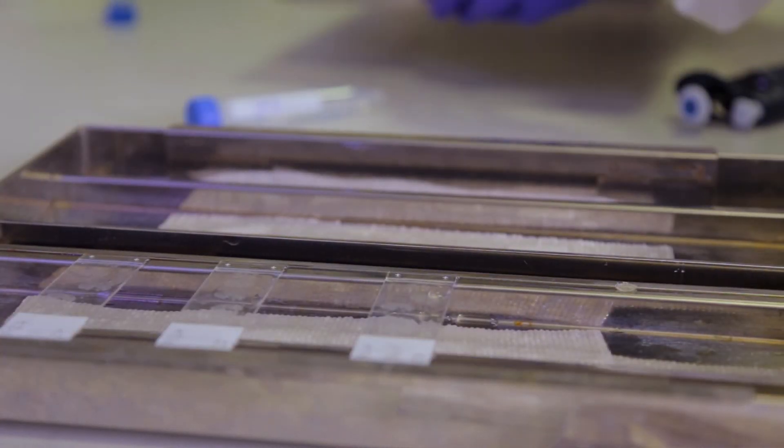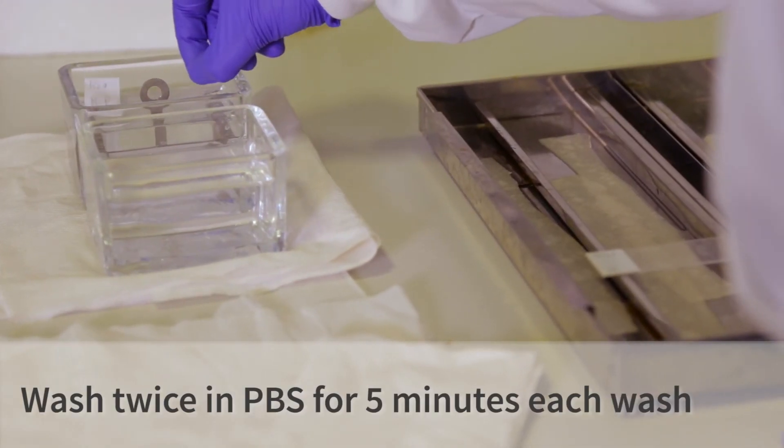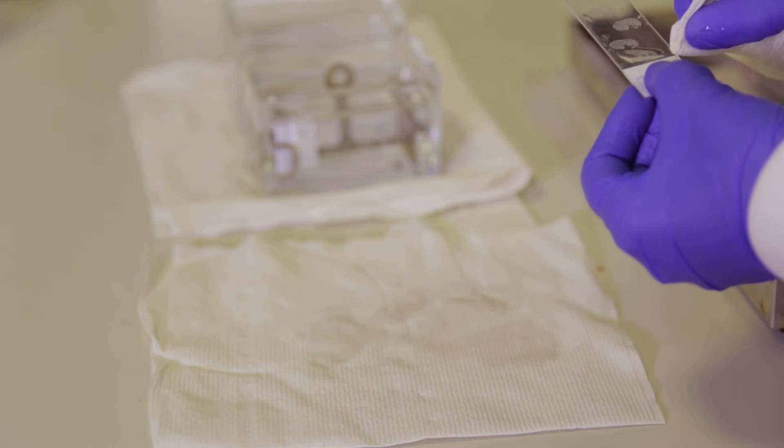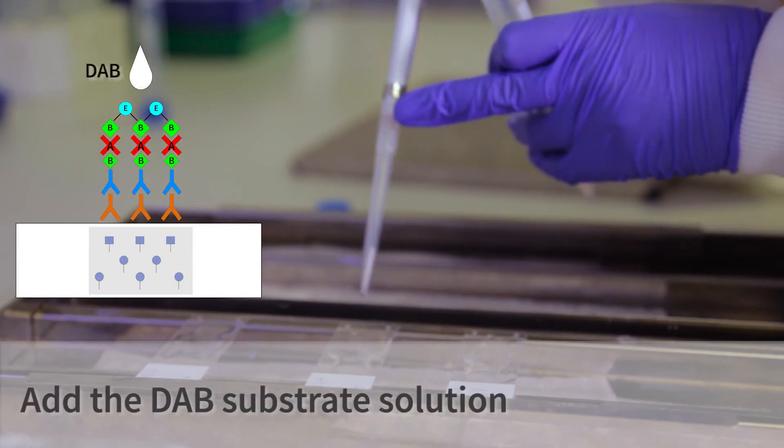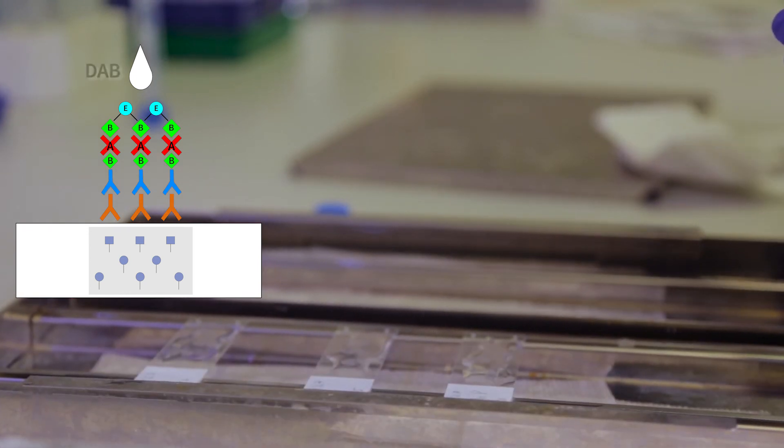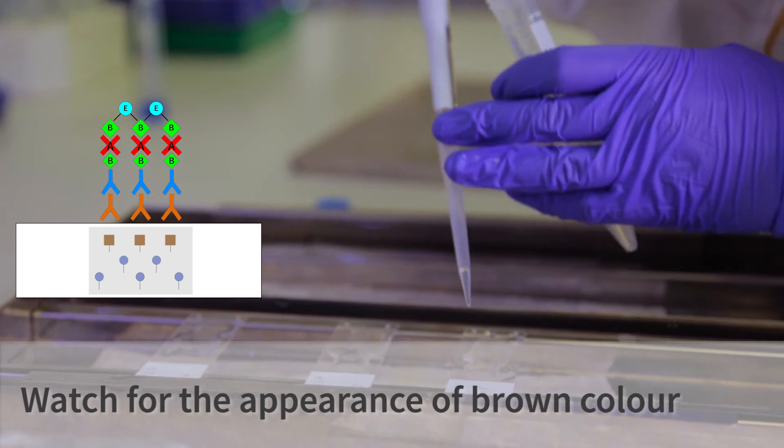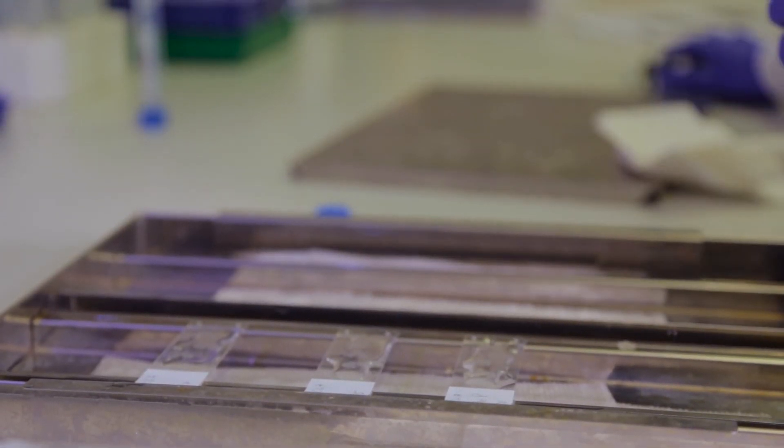The next step is the addition of the substrate. For this, we again rinse the slides in PBS twice for five minutes. We then dry the back and sides and pipette on the DAB solution. Watch the slides carefully after you pipette the DAB solution on. The tissue should start to turn brown. DAB is extremely toxic, so take care whilst using it and treat any lab equipment with bleach afterwards.